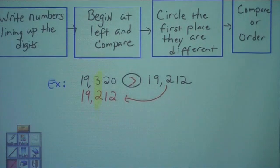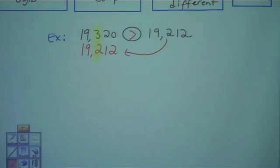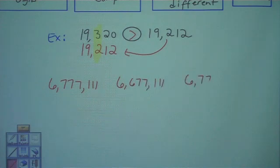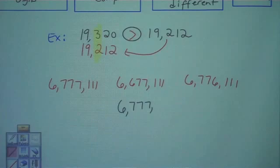Now let's try when we're ordering numbers. We're going to put these numbers in order, least to greatest. So here's our three numbers. Okay, according to the first step, we need to write the numbers lining up the digits.